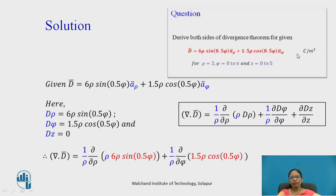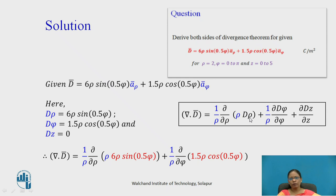Now let us take the specific D-bar we are solving. For this D-bar, the component along ρ-hat is Dρ, the component along φ-hat is Dφ, and there is no z-component, so Dz = 0. I can now substitute these values into the divergence equation del dot D-bar, placing Dρ, Dφ, and Dz = 0 at their respective positions. The result after substitution is shown in red.